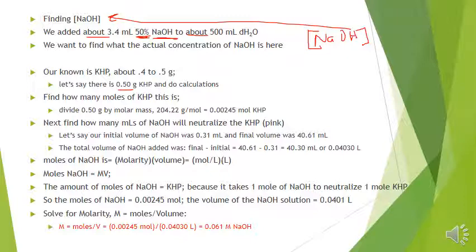The first thing we want to do is find out how many moles of KHP there are, because the moles of KHP will equal the moles of NaOH. Remember, moles equals mass divided by molar mass. The molar mass of KHP is 204.22 grams per mole, giving us 0.00245 moles of KHP. Set that aside for now.